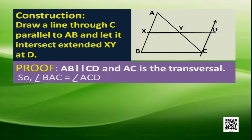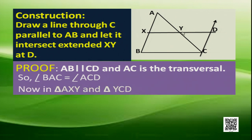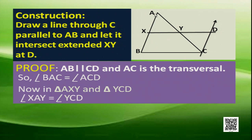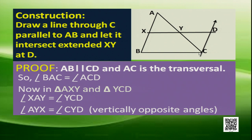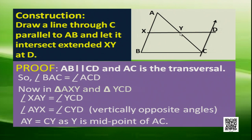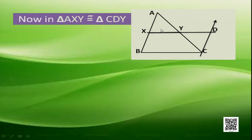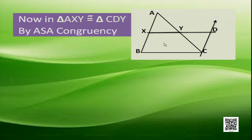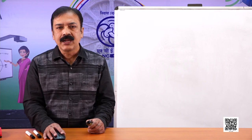Now in triangle AXY and triangle YCD: angle XAY is equal to angle YCD because we proved BAC equals ACD. Angles AYX and CYD are vertically opposite angles, so they are equal. And AY equals CY as Y is the midpoint of AC. Therefore triangle AXY is congruent to triangle CDY by the Angle-Side-Angle property.